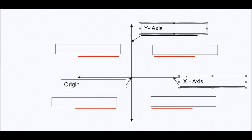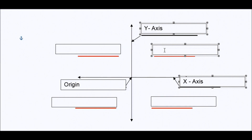Now, when these two number lines intersect, we have four sections. We call these sections quadrants. If we start at the quadrant to the very right, we call that quadrant one. And in quadrant one, your x numbers and your y numbers are both positive.